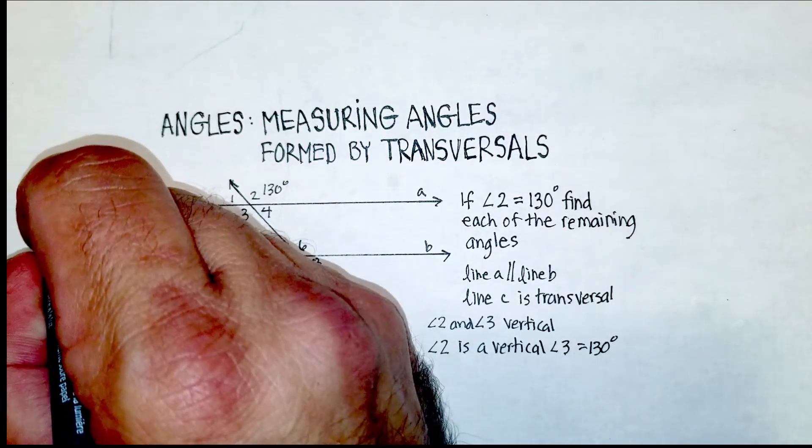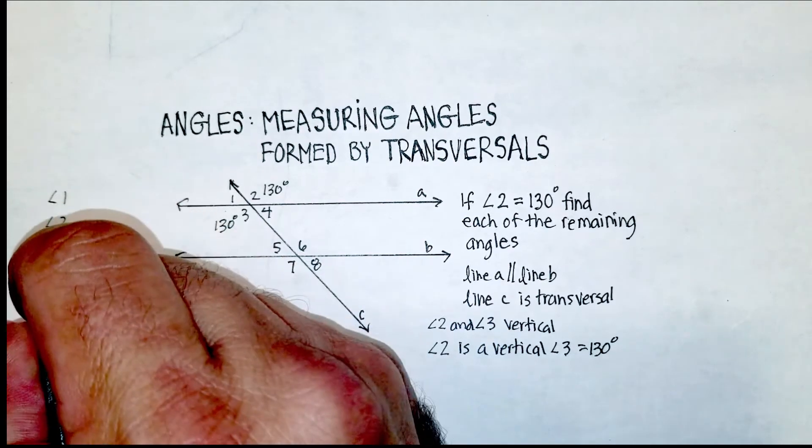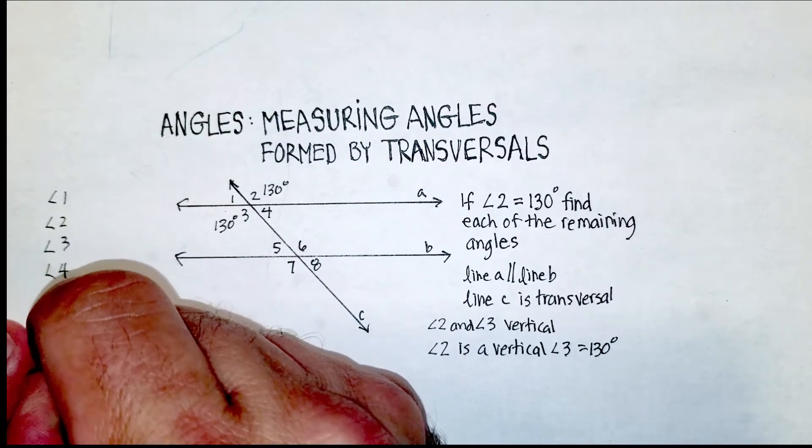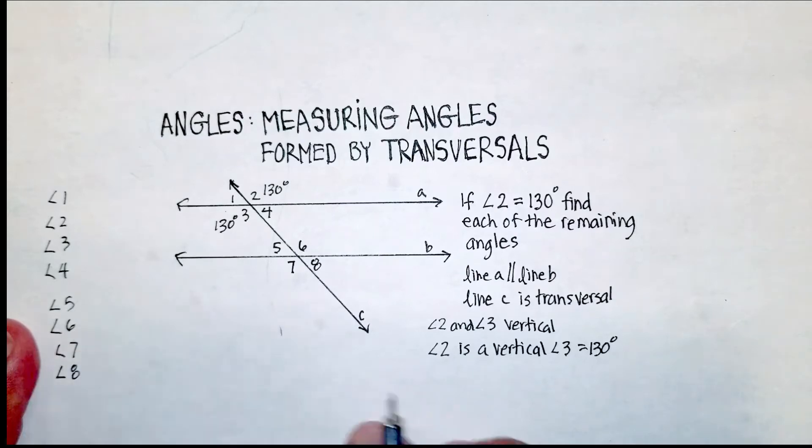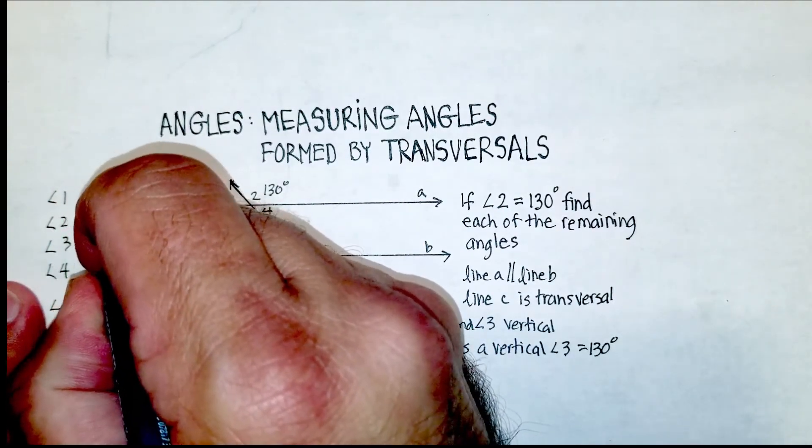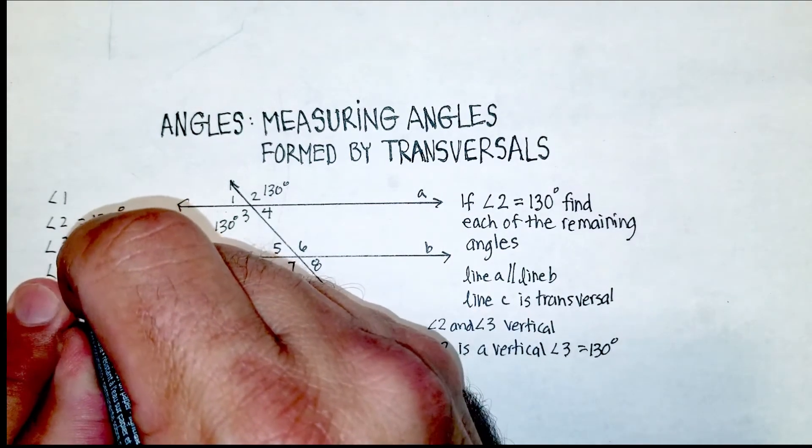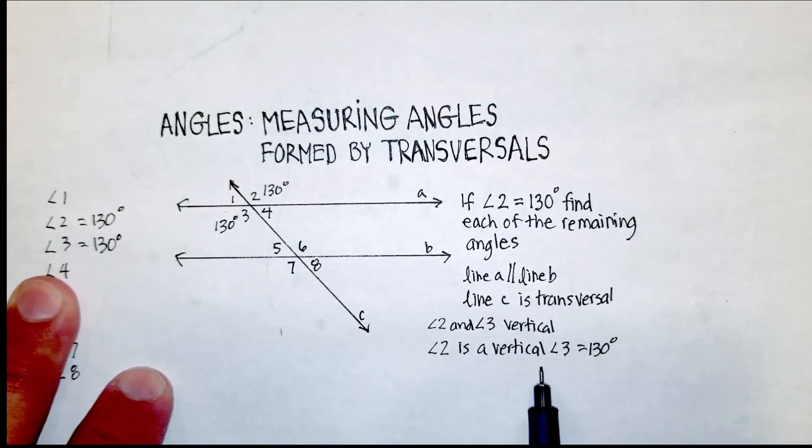So we've got our angle one here, angle two, angle three, angle four, five, six, seven, and then angle eight. So this is our given, 130. So we know that angle three is also 130 because they are vertical angles.